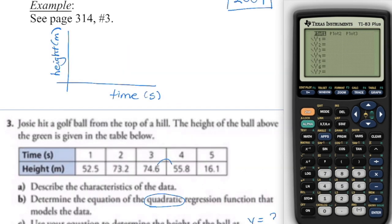Let's take a look at one of the examples in your homework — page 314, number three. First, figure out the independent and dependent variables, and always make a quick sketch and label it. Our data is increasing steadily on the x-axis. On the y-axis, we go up, up, down, down — there's one turning point, so I know it's going to be a quadratic.